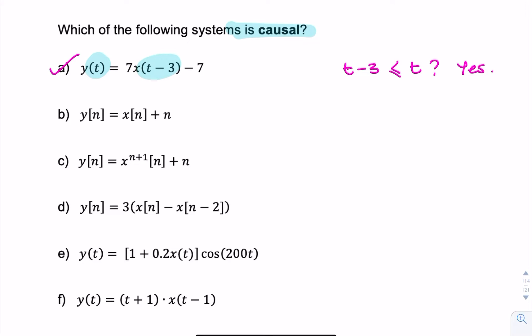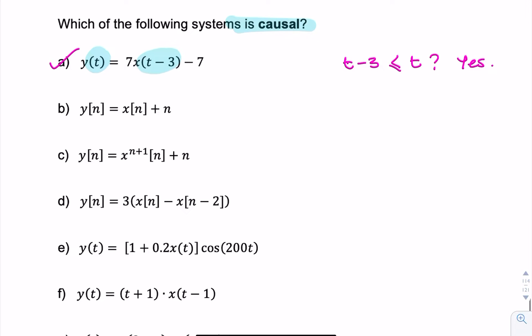For the second system, we're not interested in this n here. We're only interested in the input and whether or not the output is anticipating the input. So we ask ourselves: is n always less than or equal to n? And the answer is yes, so it is a causal system.